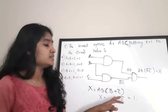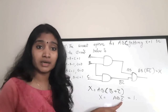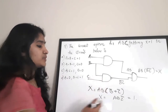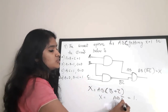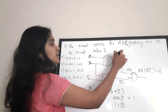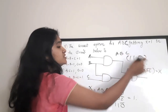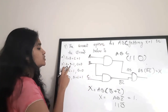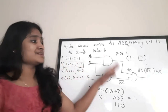Now, to make X = 1 from the product term ABC̄, you need A=1, B=1, and C̄=1 (which means C=0). So the combination required is A=1, B=1, C=0. The correct answer is option B: A=1, B=1, C=0.